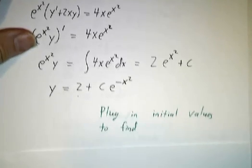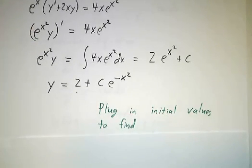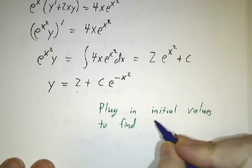And that means that y is 2 plus an arbitrary constant times e to the minus x squared. And if somebody gave us initial values, we could plug them in to find c.